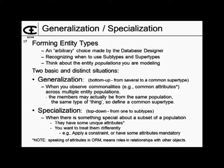Recognizing when to use subtypes and supertypes: think about the entity populations you're modeling. There are two basic situations. Generalization says: I recognize some commonalities and I want to put things into a bigger population — that's bottom-up. You observe commonalities and define a common supertype. Specialization is looking down: I have a population of things but there's a subset of that population that I want to handle in a very special way.